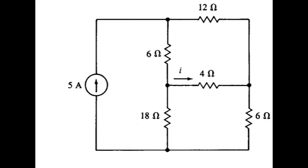In this problem, the goal is to find the current I1, and we want to use the node voltage method.